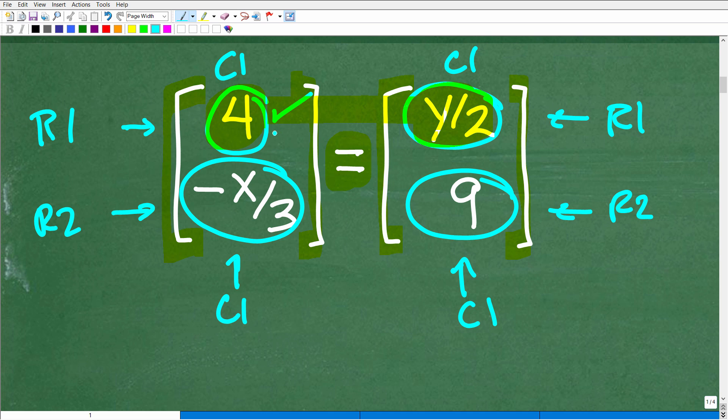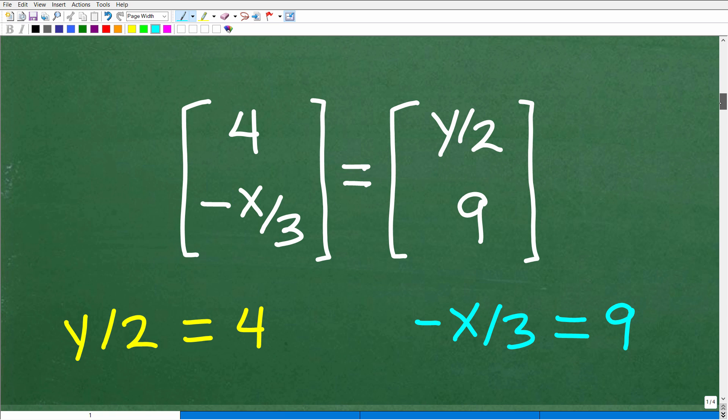All we need to do is create an equation here for these respective entries. So we're going to say, well, four must be equal to y over two. So we'll just create an equation here. We'll write it this way. We'll put the variable on the left-hand side, y over two, or y divided by two, same thing, is equal to four. And then here we have negative x over three, and we'll equate that to nine. So we have negative x over three is equal to nine.